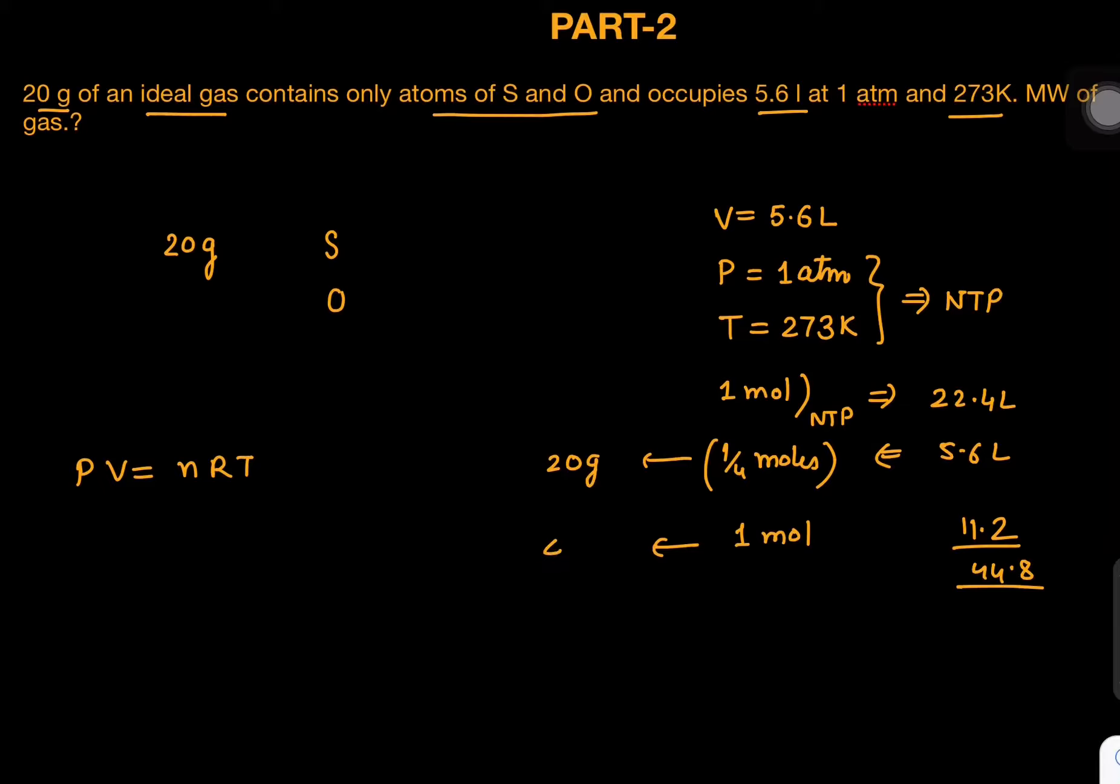What is the answer? It will be 4 times 20, so answer is 80 grams per mole. You can also predict which gas it could be - it can be SO3, which is 32 plus 3 times 16 which is 48, so total will be 80.